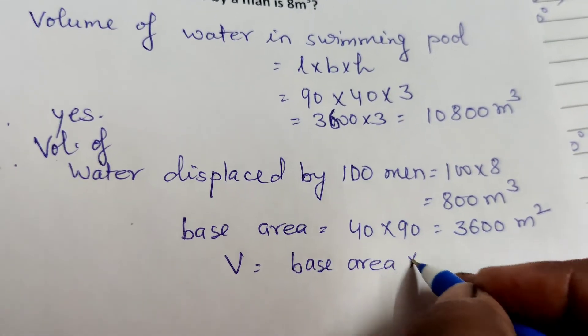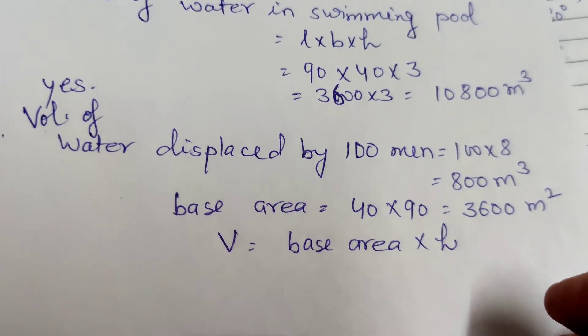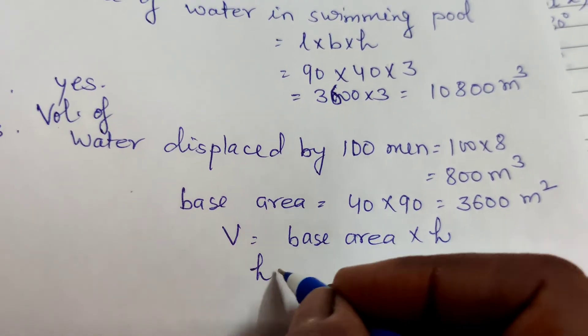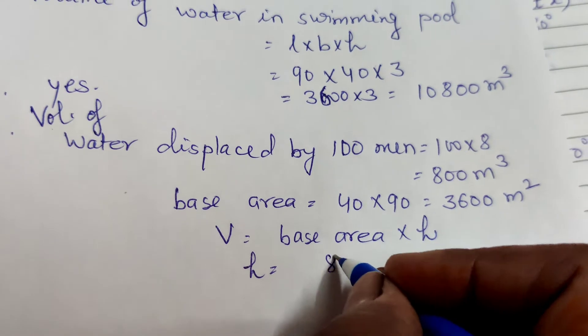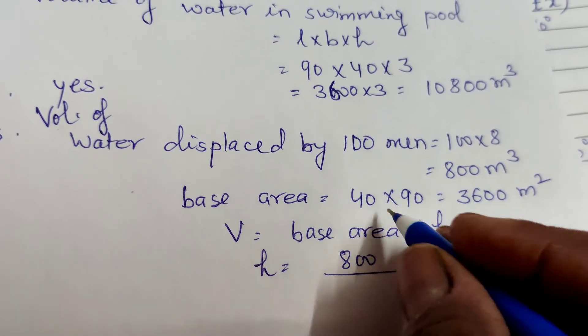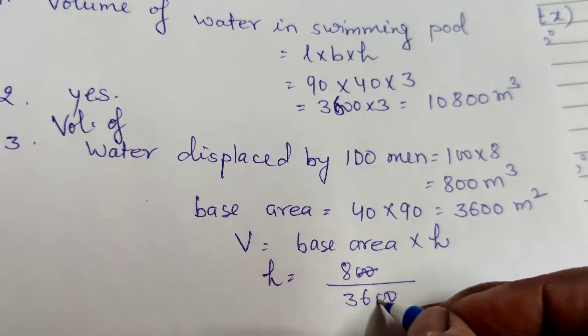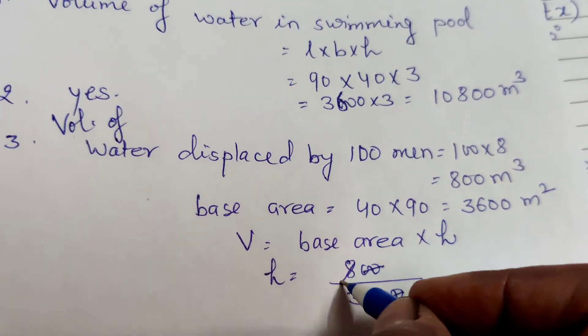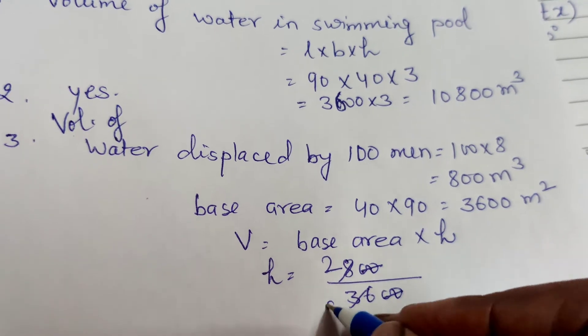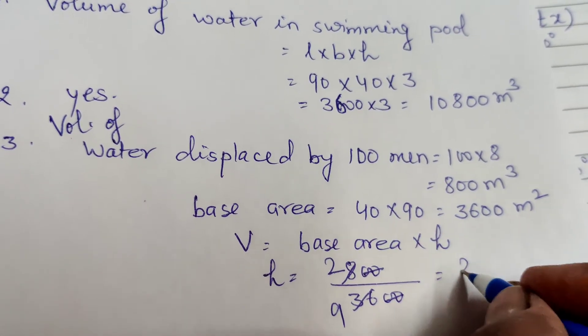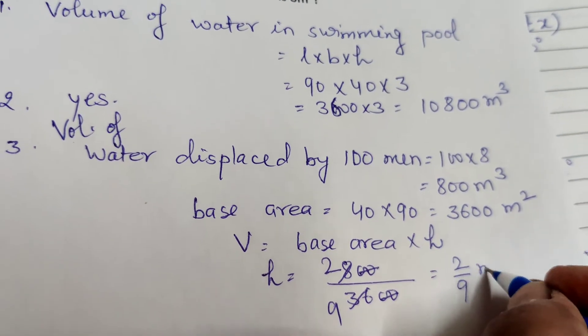Volume equals base area into height, or the rise in water. This means height equals volume divided by base area. That's 800 cubic meters divided by 3,600 square meters. Canceling, we get 2 by 9. The rise in water level is 2/9 meter.